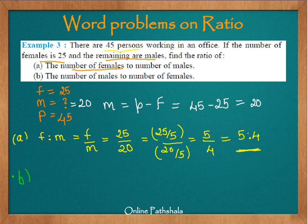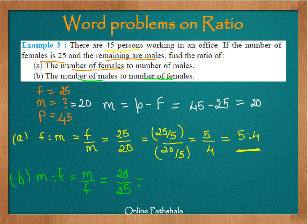Now let us look at part B, which asks for the number of males to the number of females. We find M is to F, or M by F. The number of males is 20 — our numerator — and females is 25. We divide both 20 and 25 by 5 to arrive at 4 by 5. So the number of males to females is 4 is to 5.